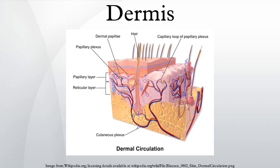The dermis is a layer of skin between the epidermis and subcutaneous tissues that consists of connective tissue and cushions the body from stress and strain. It is divided into two layers: the superficial area adjacent to the epidermis called the papillary region, and a deep thicker area known as the reticular dermis.